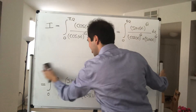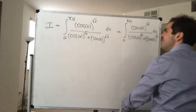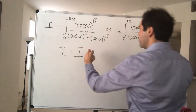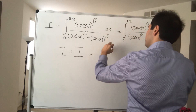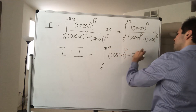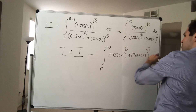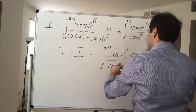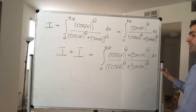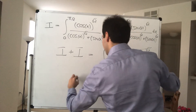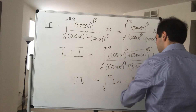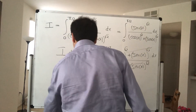And here comes a beautiful trick — thanks Sho, always gives me the best ideas. Calculate I plus I. Adding the two expressions, they share the same denominator, so the numerators add: cosine of x to the square root of 2 plus sine of x to the square root of 2. Lo and behold, that cancels with the denominator, and you're left with 2I equals the integral from 0 to π/2 of 1 dx, which is π/2. So I is just half of that: I equals π/4.